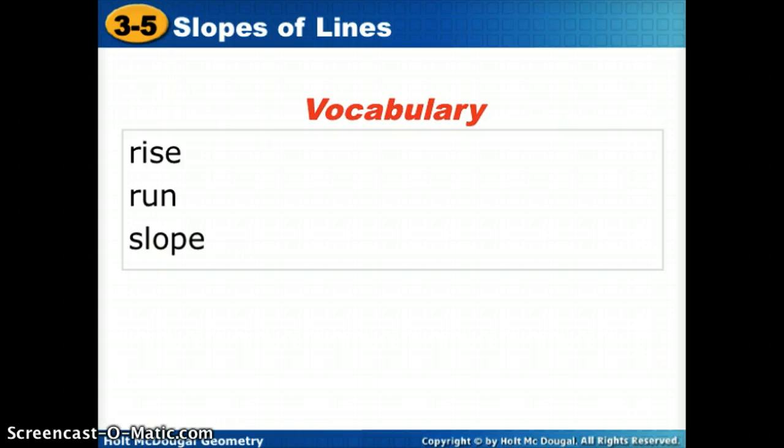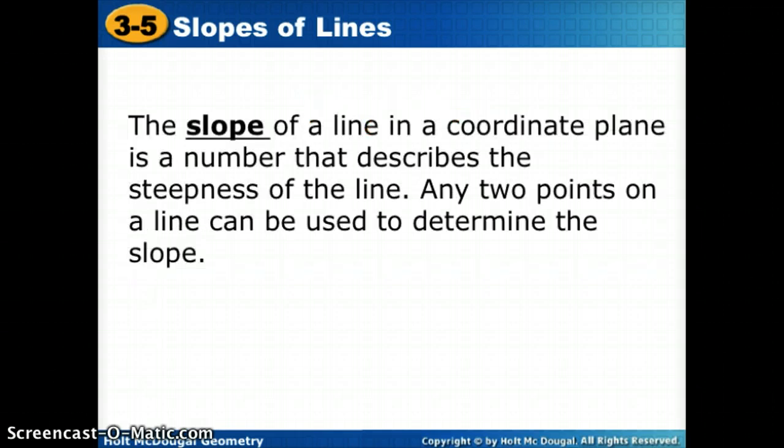We're going to work with things you need to know: rise, run, and slope. As we've learned in the past, the slope of a line in a coordinate plane is a number that describes the steepness of a line. Any two points on a line can be used to determine slope. So slope gives us steepness, a number value to how steep a line is.